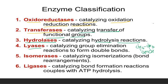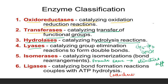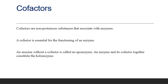Isomerases catalyze isomerization reactions, meaning the molecular formula remains the same but only the structure differs. Ligases basically help in attachment by using ATP. This is the classification of enzymes.